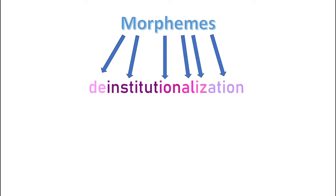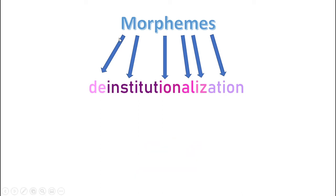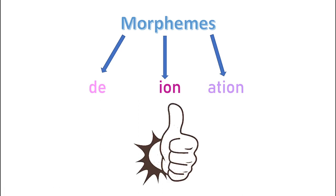We can recognize them, parse the word, and understand its meaning with relatively little effort, even if only familiar with the parts and not the word as a whole. To illustrate this ability, take a look at this word that I just made up: unlampify.